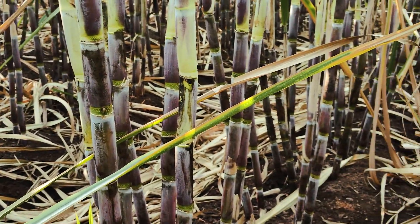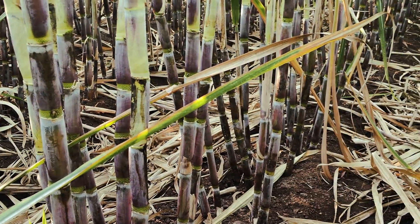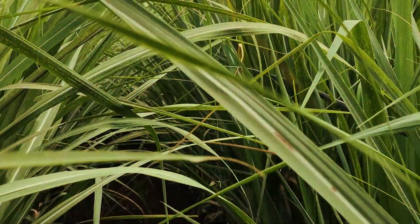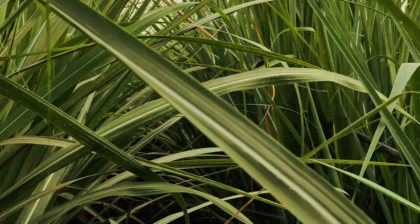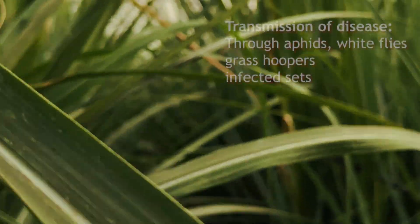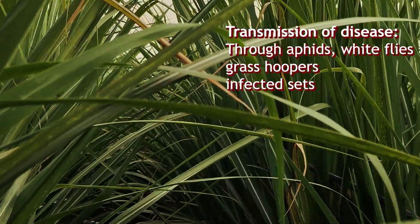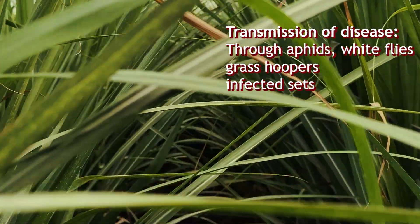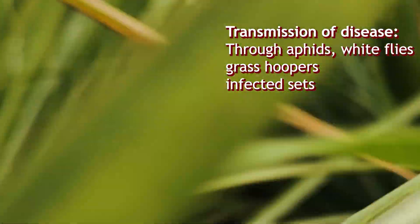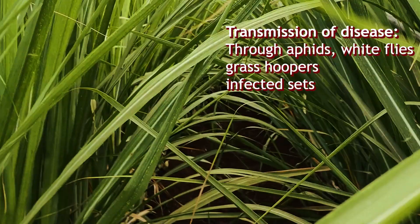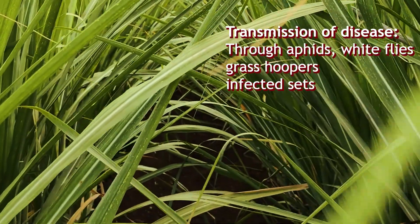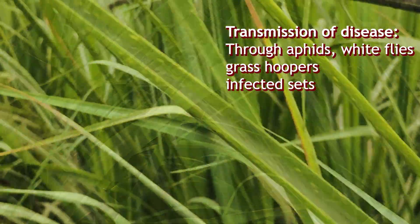How is this disease transmitted? This disease primarily spreads through insect vectors, mainly the aphids and leafhoppers, which feed on the sap of the infected plants.